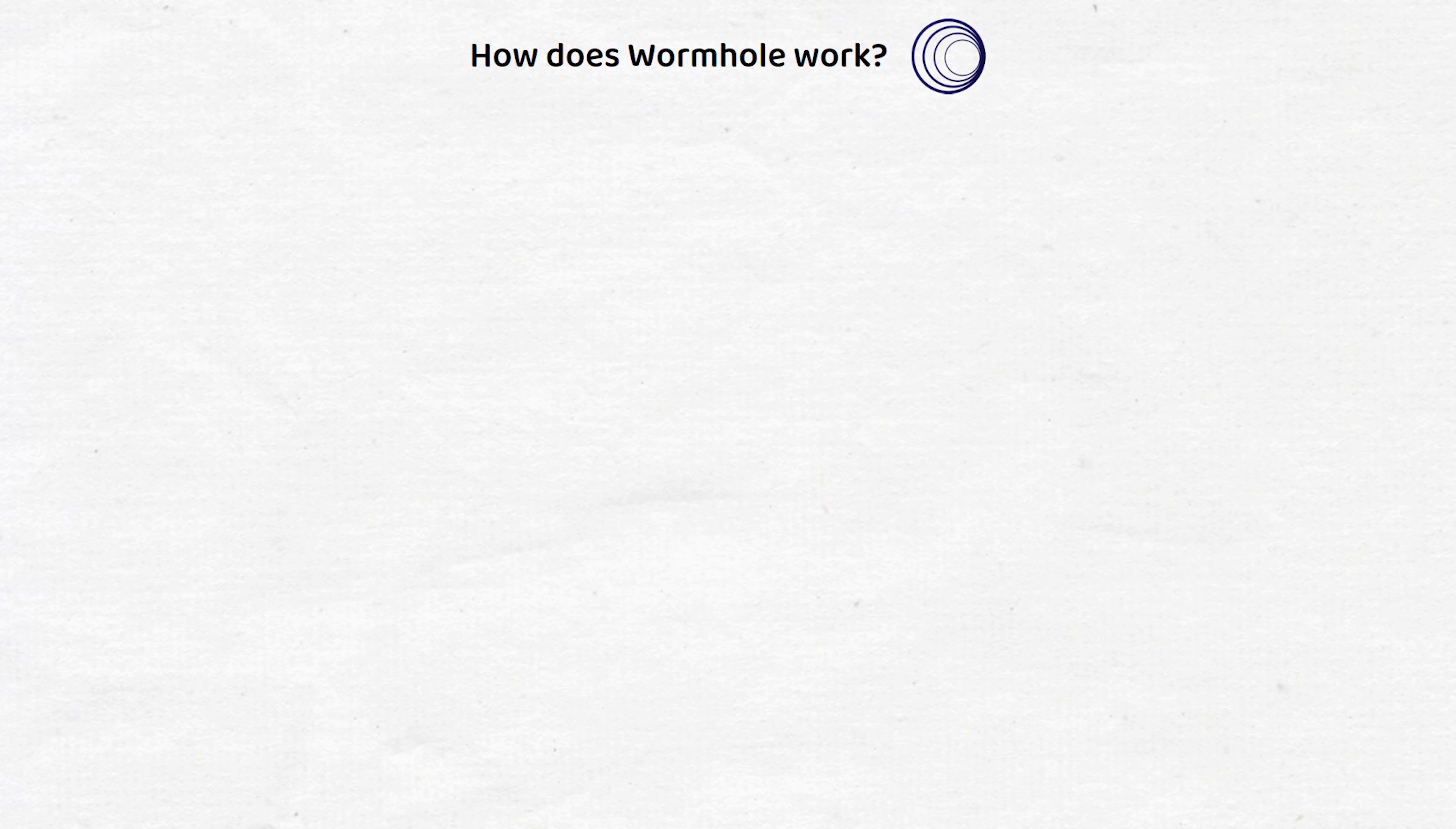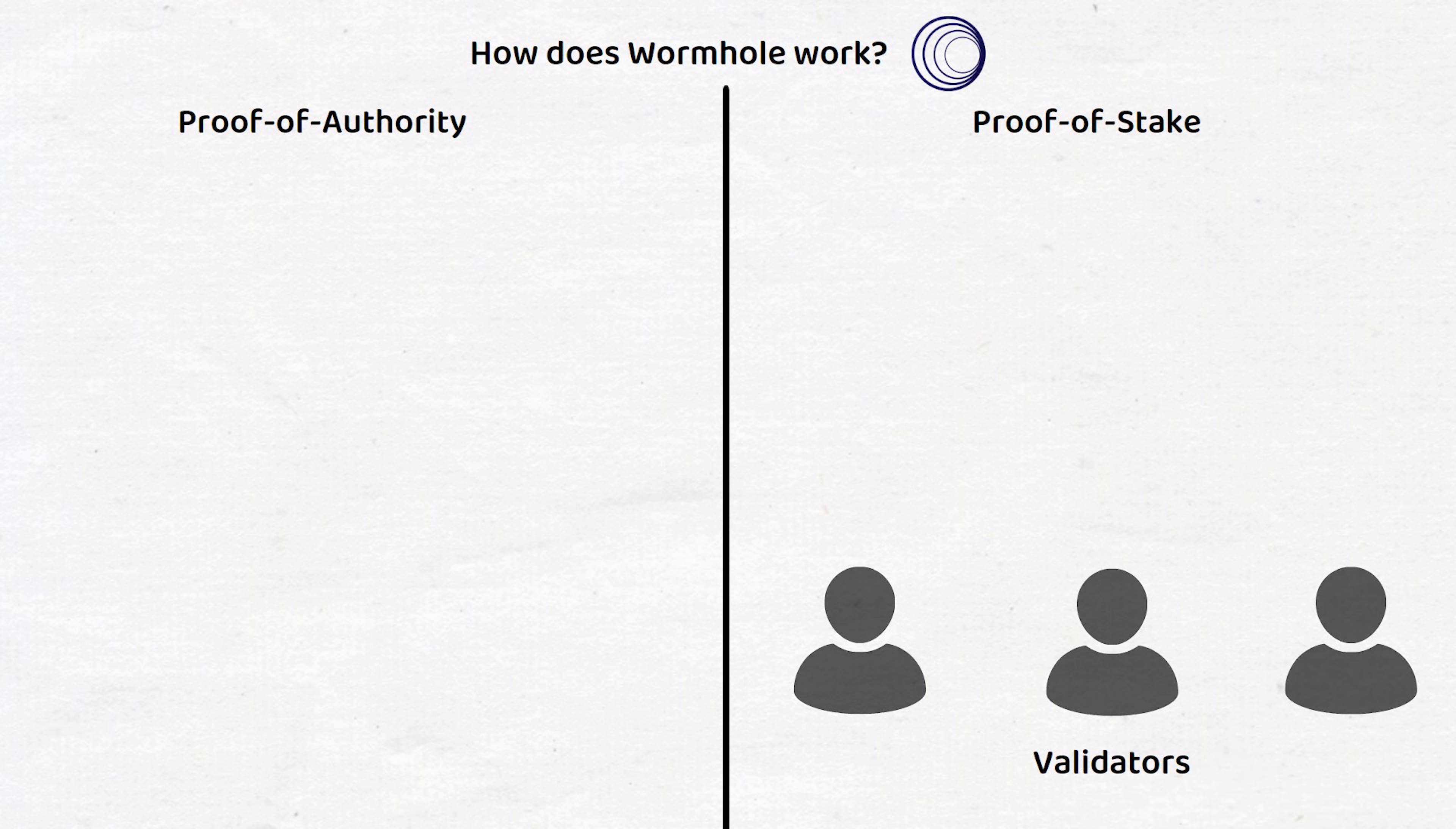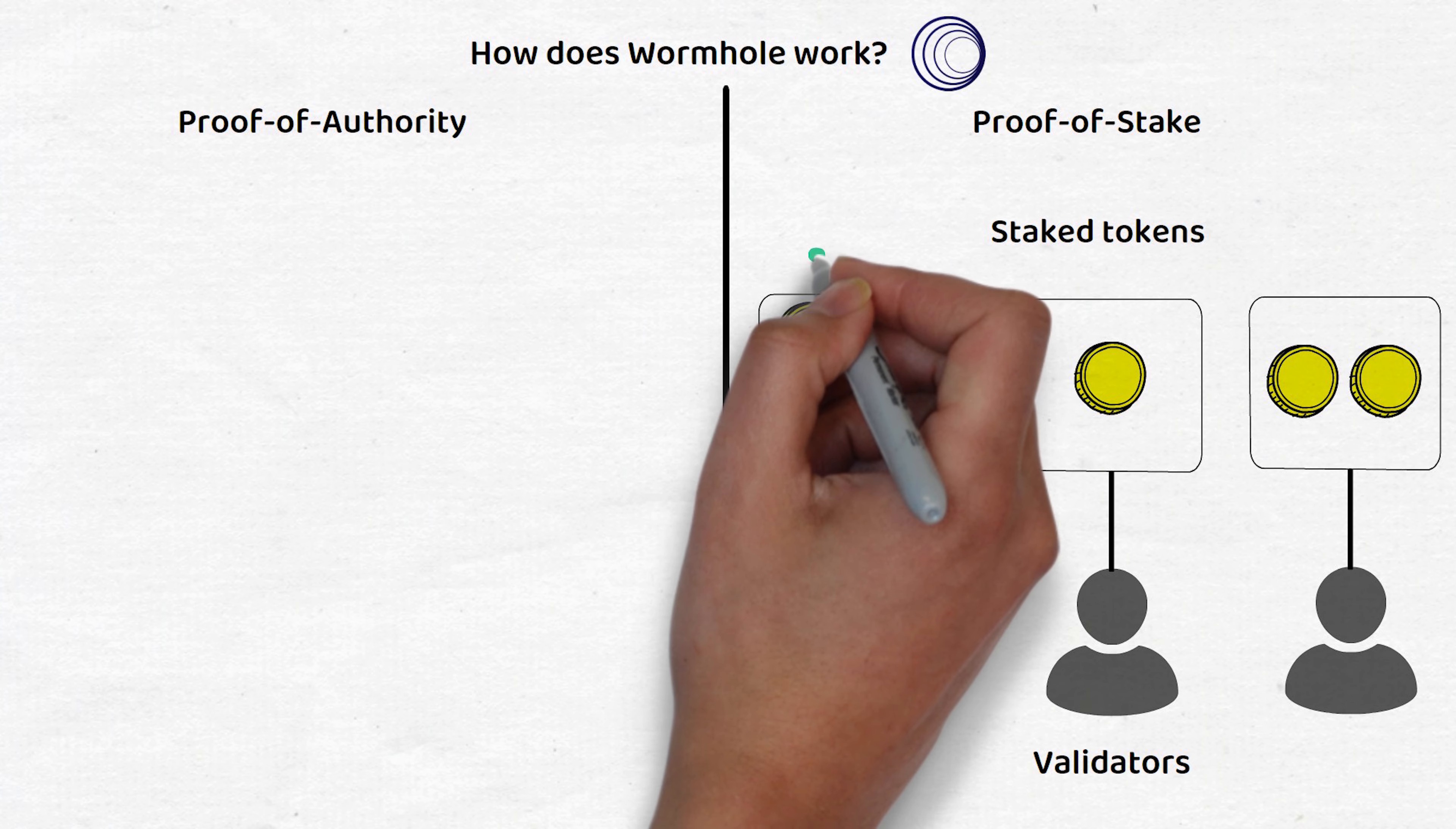Wormhole is a proof-of-authority-based platform. Typically, proof-of-stake networks allow anyone to become a validator to help secure the network, with their likelihood of being selected as a validator being directly correlated with how many tokens they have staked to the network. However...